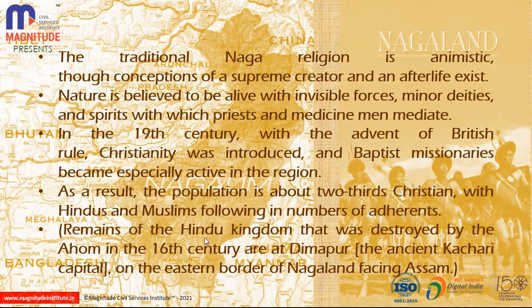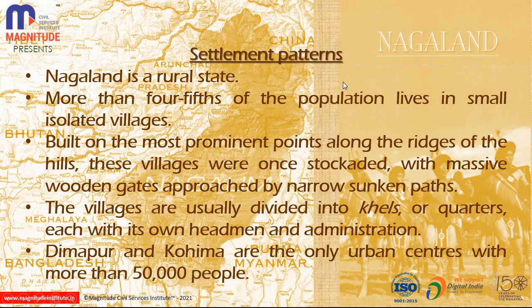The remains of a Hindu kingdom were destroyed by the Ahom Dynasty in the 16th century. The ancient Kachari capital, Dimapur, is on the eastern border of Nagaland in the Assam plains. Regarding settlement patterns, Nagaland is a rural state where more than four-fifths of the population lives in small isolated villages built on prominent ridge points. Villages are divided into clans and quarters, each functioning as an administrative unit.